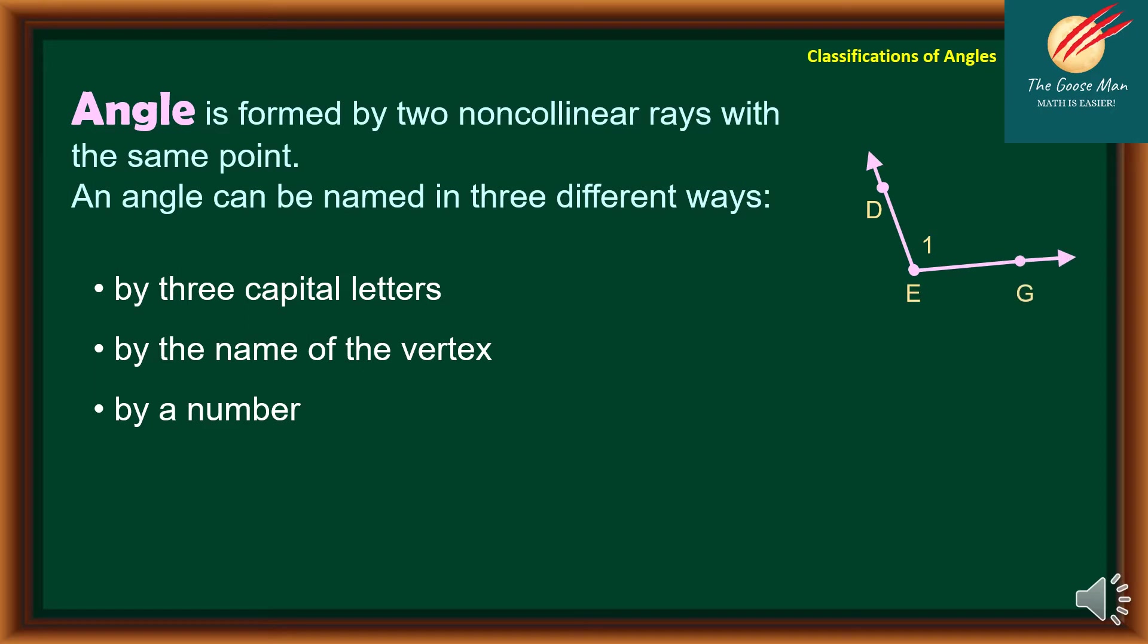Let's consider this illustration on the right side. By three letters, we can have angle DEG or angle GED. By the name of the vertex, we have angle E. By a number, we can have angle 1.